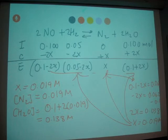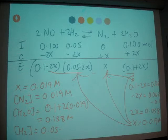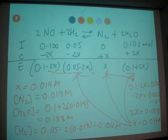So we have N2, we have H2O concentration. We have H2 concentration, 0.05 minus 2 times 0.019. And when you calculate for NO concentration, you get the same amount. So 0.1 minus 2X, that we can plug it in and find out.